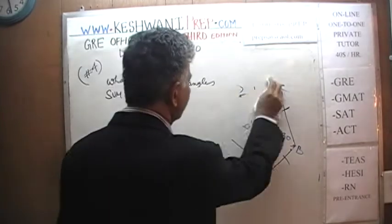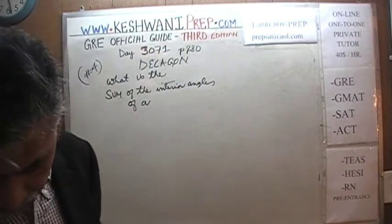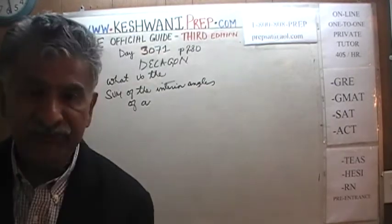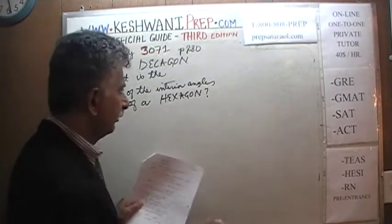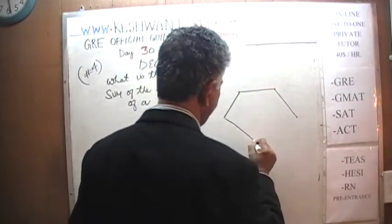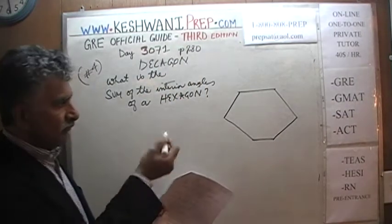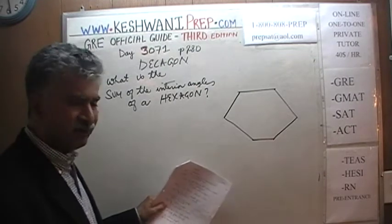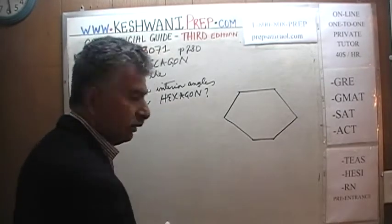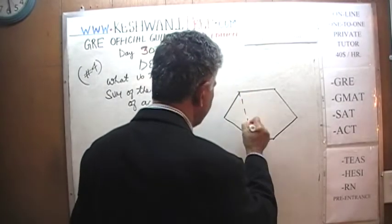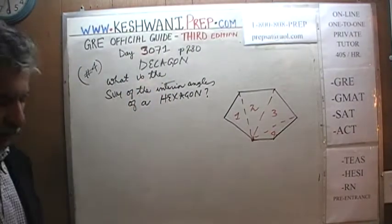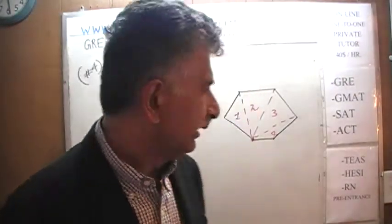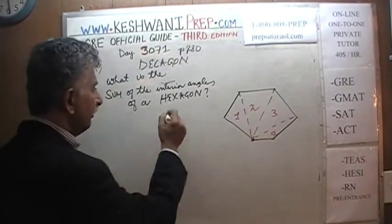What about a six-sided picture? A six-sided picture is called a hexagon. What's the sum of the interior angles of a hexagon? A hexagon is nothing more than a union of four triangles. Pick any point and draw the diagonals — there is one triangle, another triangle, and one more triangle. We know the sum of the angles in one triangle is 180, therefore the sum of all four triangles will simply be four times 180.